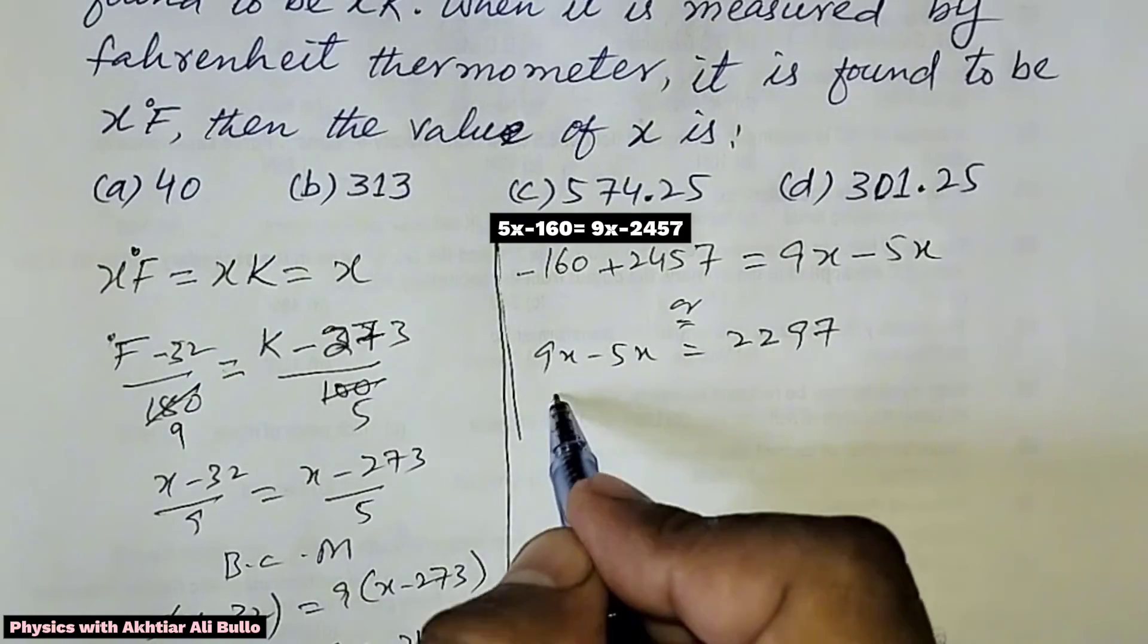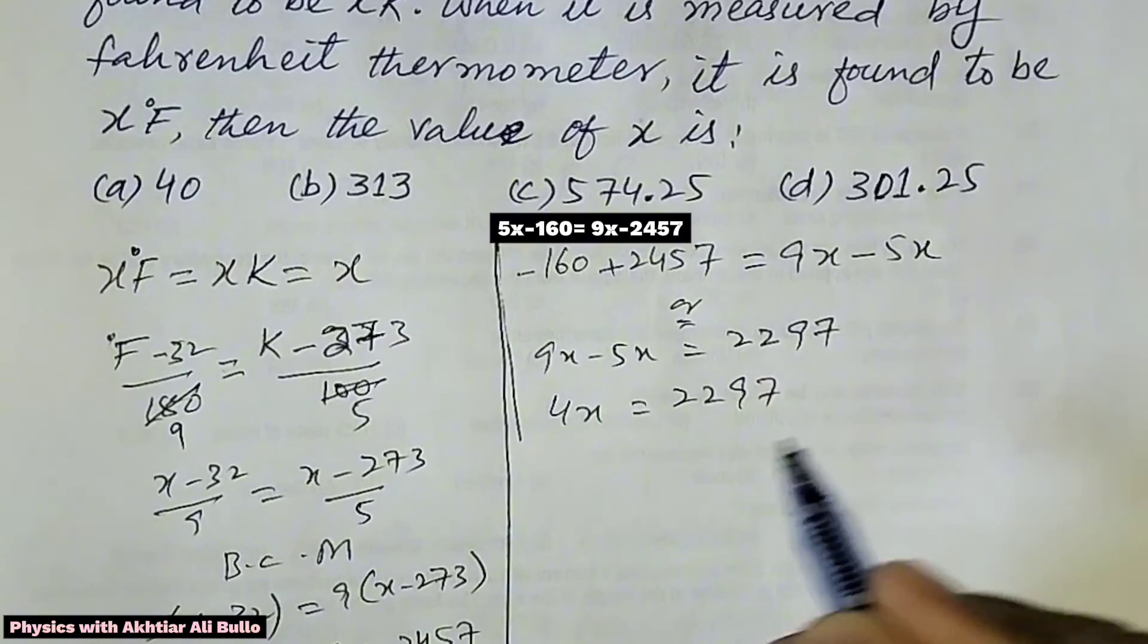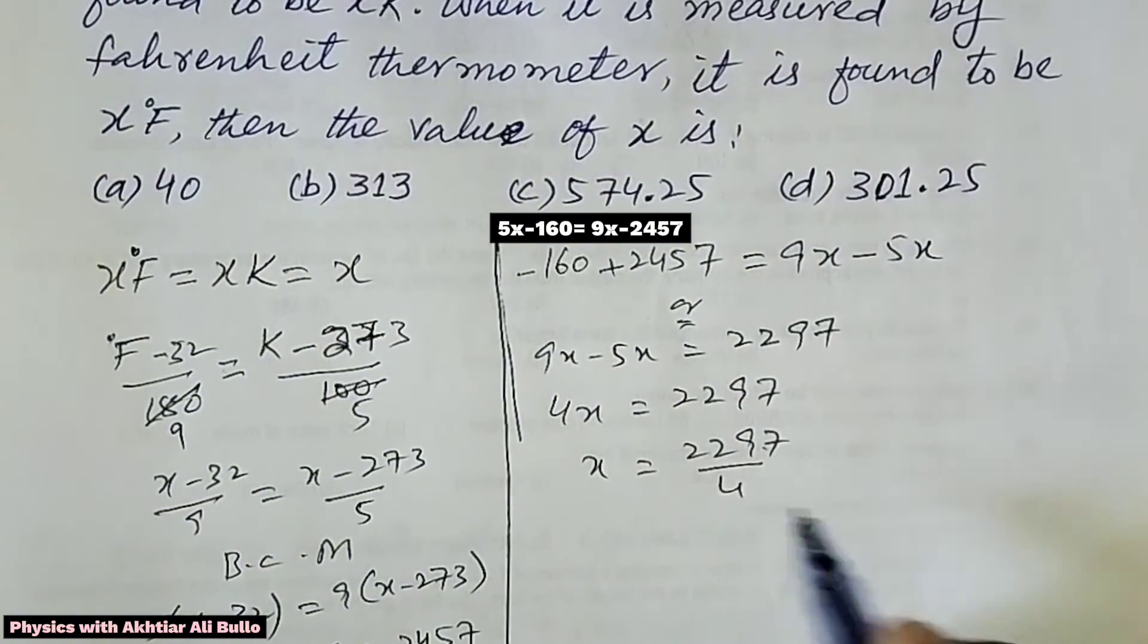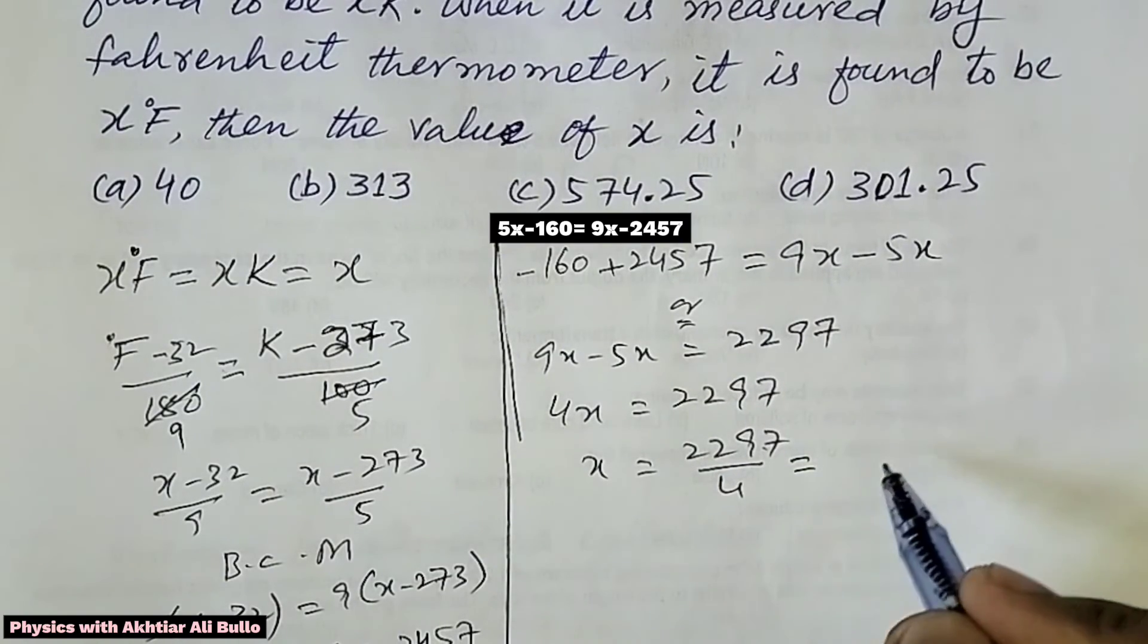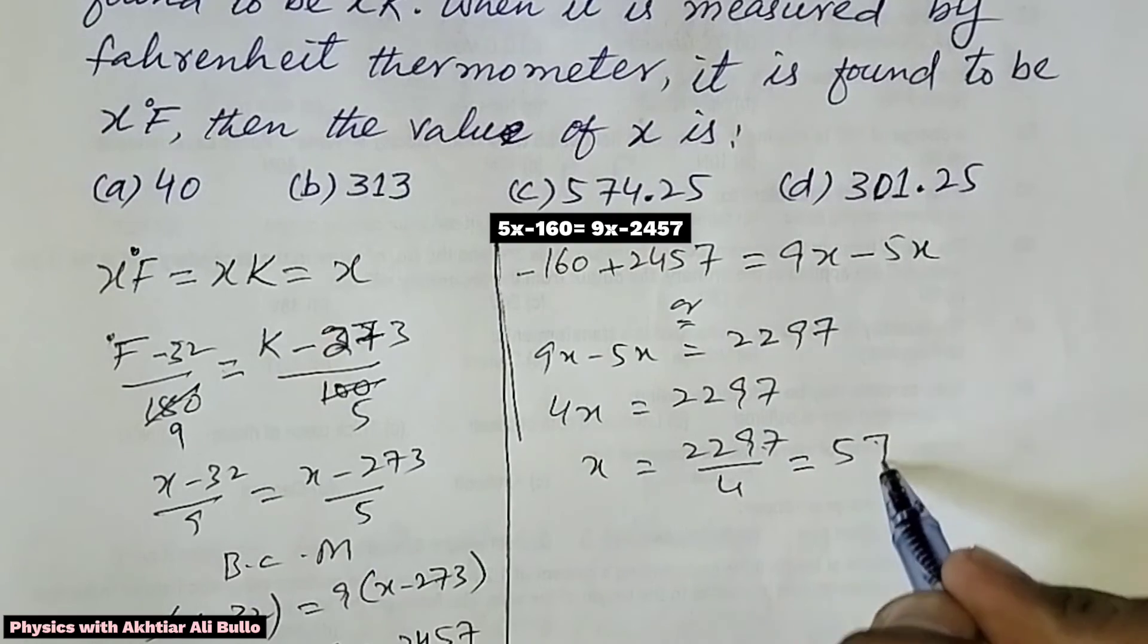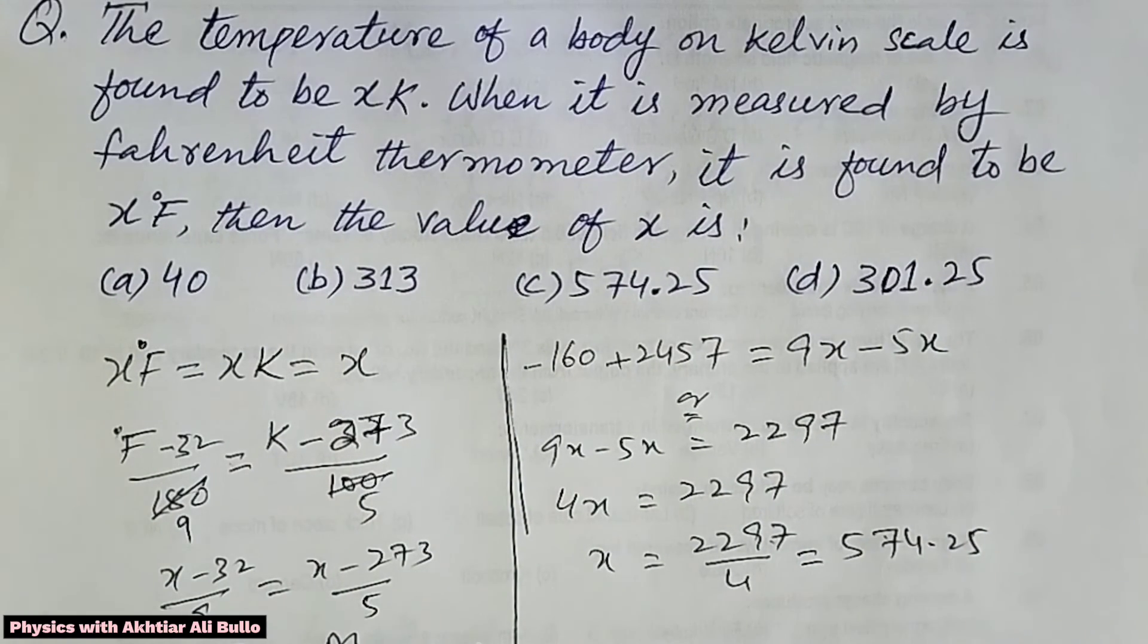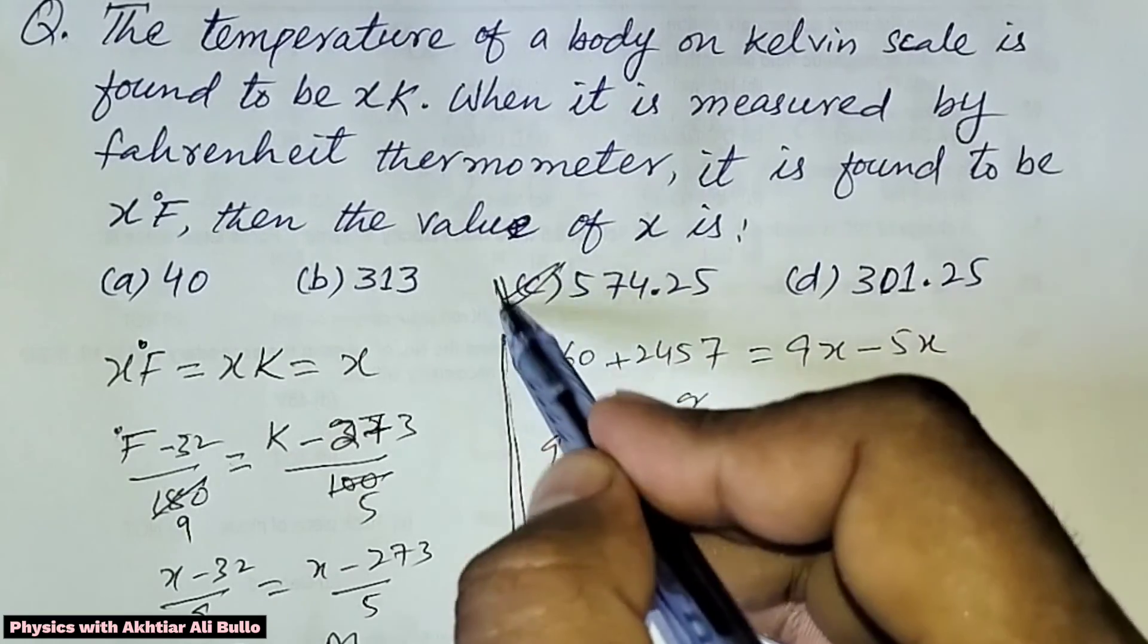So 9x - 5x, which is 4x, equals 2297. Therefore, x equals 2297 upon 4. After simplification, we get the answer is 574.25. The correct option is (c) 574.25.